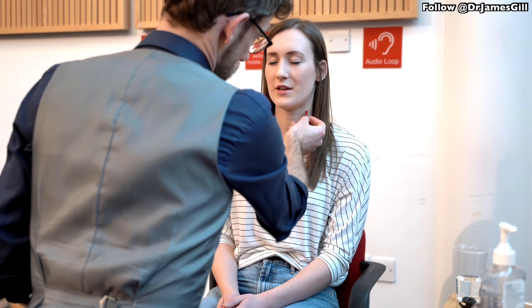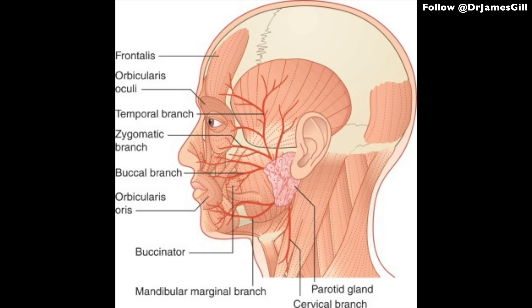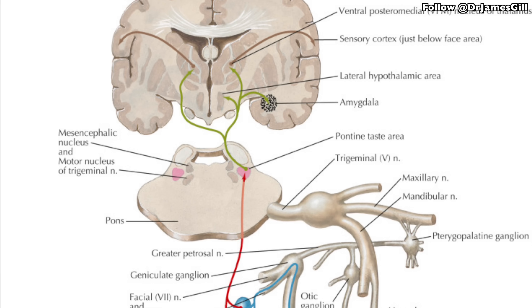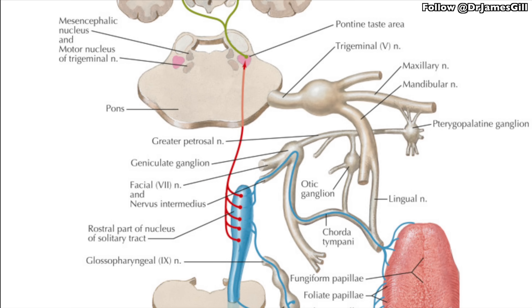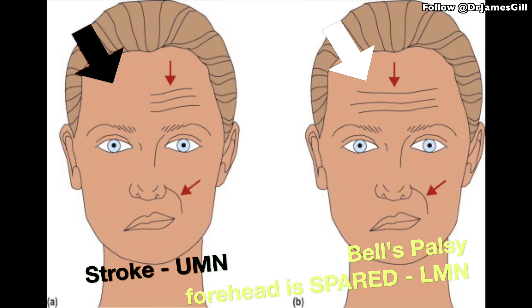While the trigeminal nerve deals with sensation of the face, the slightly confusingly named facial nerve — cranial nerve 7 — deals with the muscles of expression, such as smiling and grimacing. It also provides a small sensory component giving taste over the anterior two-thirds of the tongue. Issues with cranial nerve 7 may present as facial weakness or loss of taste. Classically a stroke can present with facial nerve weakness, and similarly Bell's palsy — a lower motor neuron lesion affecting the facial nerve — will affect expression, but in a crucially different way compared to a stroke.